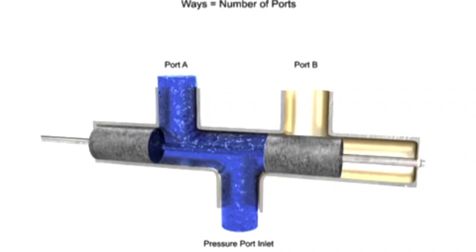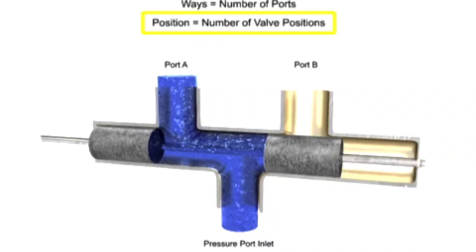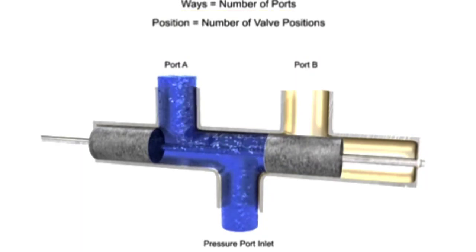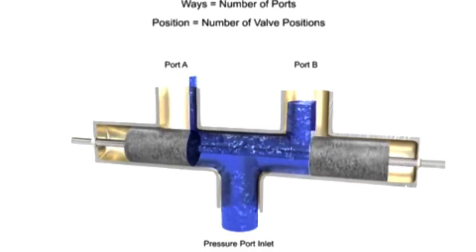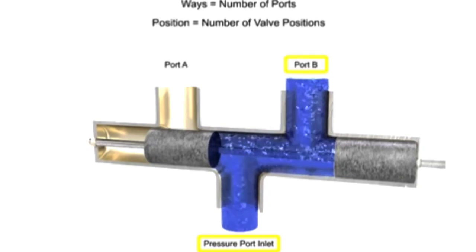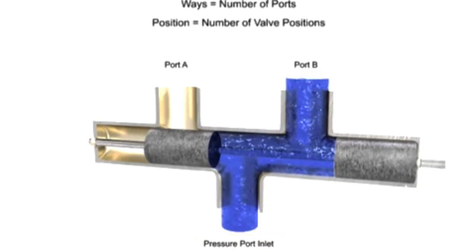The term position refers to the number of discrete operating positions of the internal valve element. For this spool valve, one position allows fluid to flow from the inlet to port A, and a second position allows fluid to flow from the inlet to port B. Therefore, this is a two-position valve.